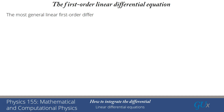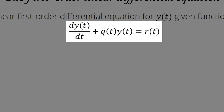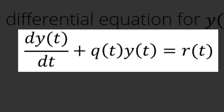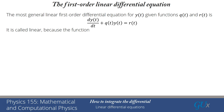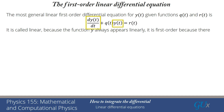The most general linear first order differential equation takes the following form. There's a function y of t we're going to solve, with given functions q of t and r of t. What we have is the first derivative dy/dt plus q(t) times y(t) equals r(t). We call it linear because y, even though it appears with derivatives, is only appearing linearly — there's never a y squared, never a y times a derivative, never a y cubed or a cosine of y. y only appears as dy/dt or as y(t) itself.